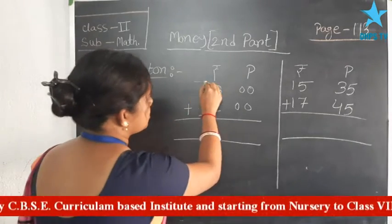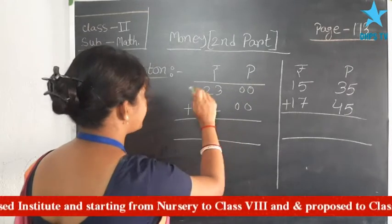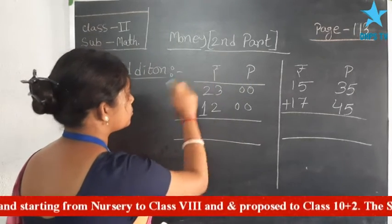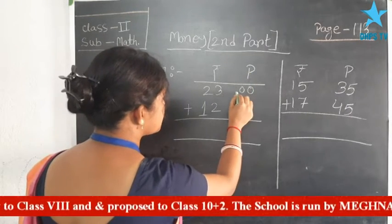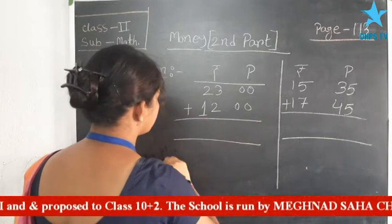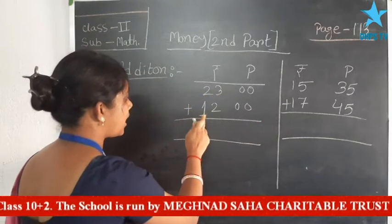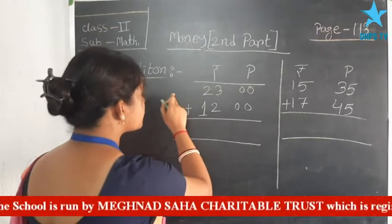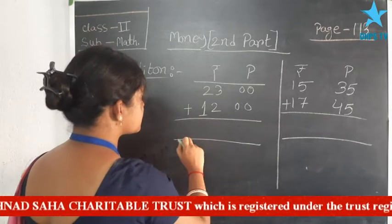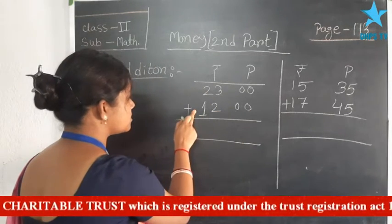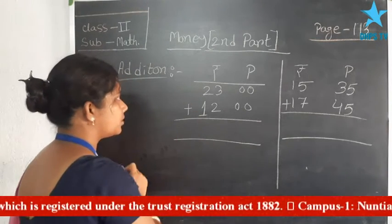At first, see the sign. This is the sign of paisa and this is rupees. In the column of paisa the numbers are 00, and in the column of rupees the numbers are 23 and 12. So in the first row the money is 23 rupees, and in the second row the money is 12 rupees. Now you have to add the two amounts.